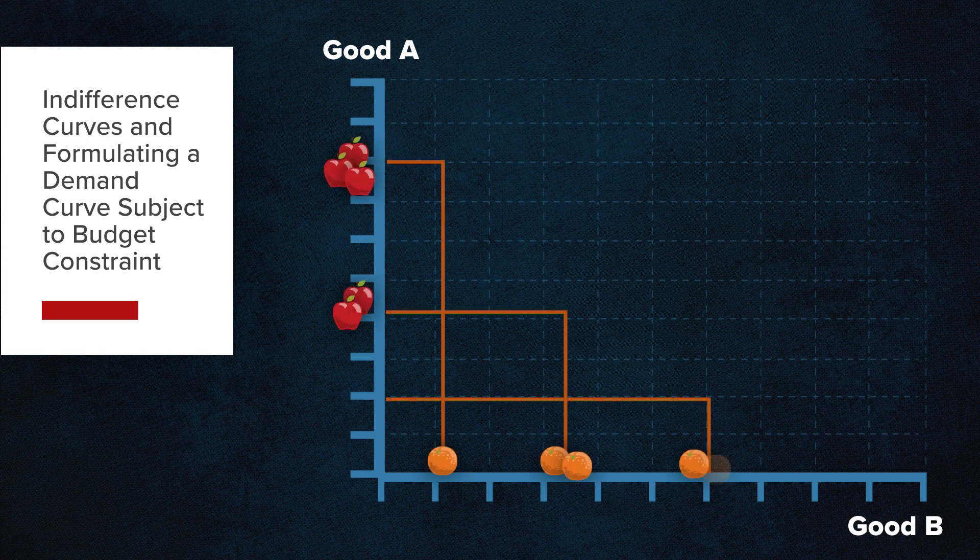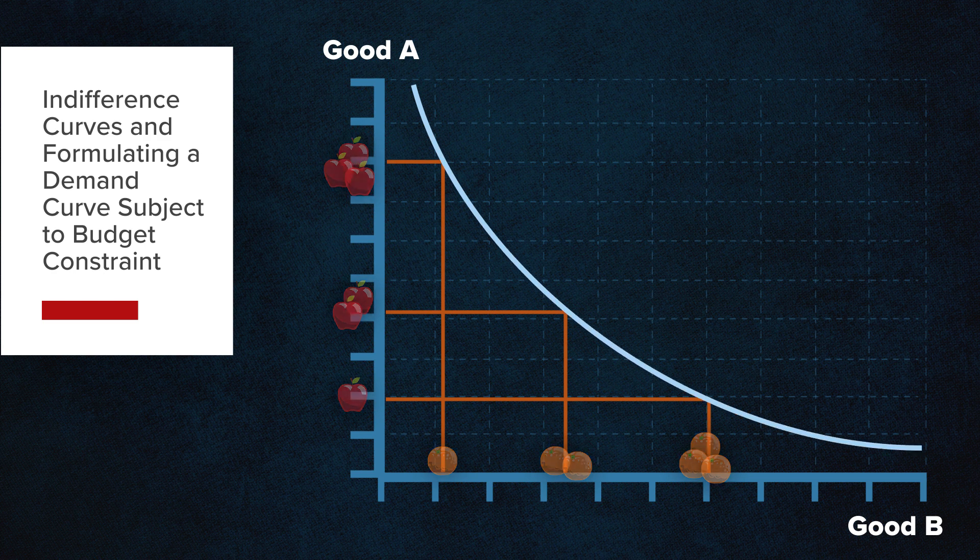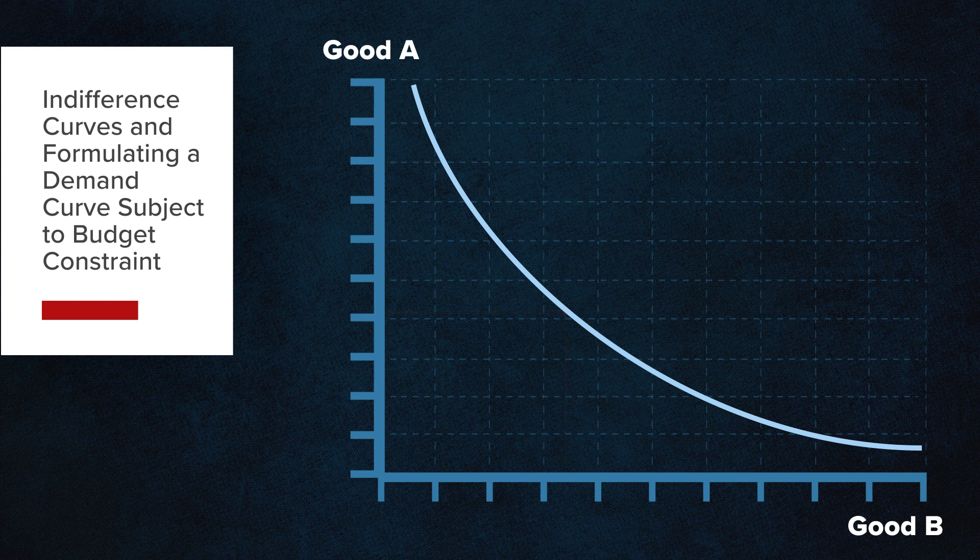By joining the combinations on a graph, we can derive a so-called indifference curve. Any point on the curve represents the same amount of utility derived by the consumer.